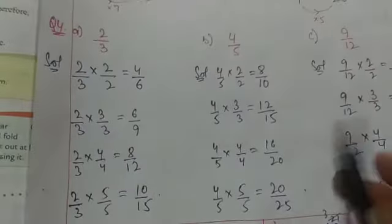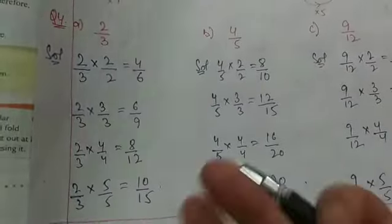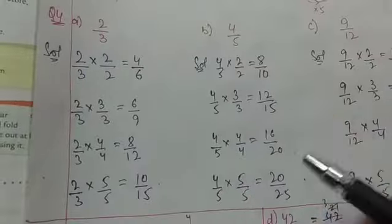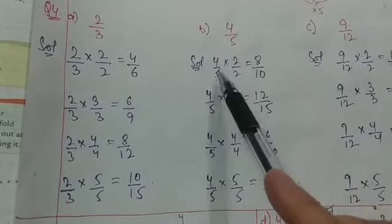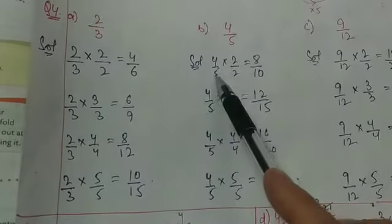Similarly in the second part we will do this. You can take any number. But the thing is which you have to multiply and divide with the same number. So it is 4 into 2 is 8. 5 into 2 is 10.